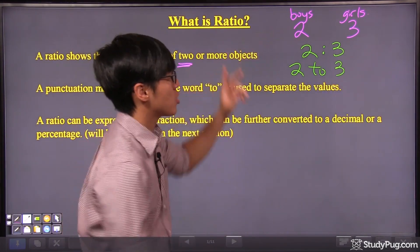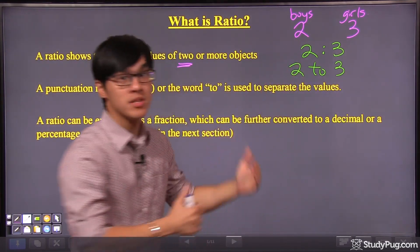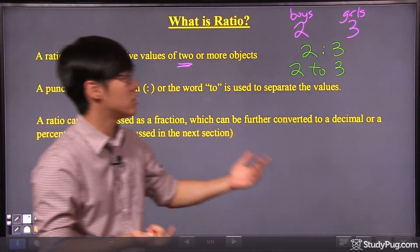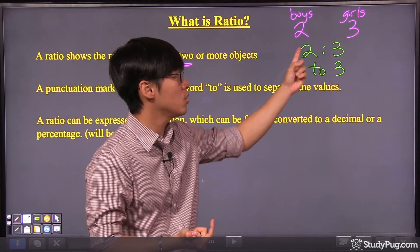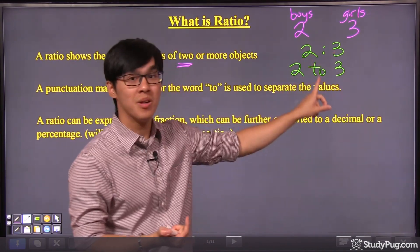This is the correct way of writing or representing ratios. If you read it out, you will read two to three. The colon means 'to'.